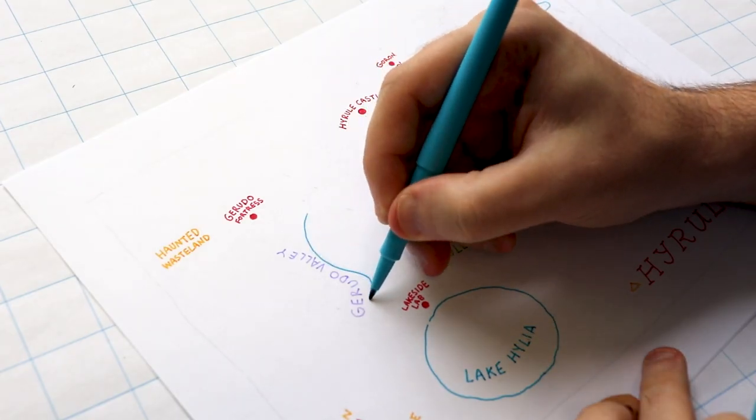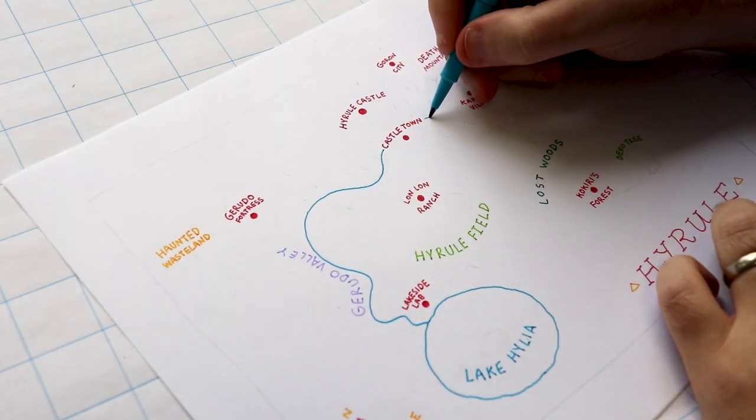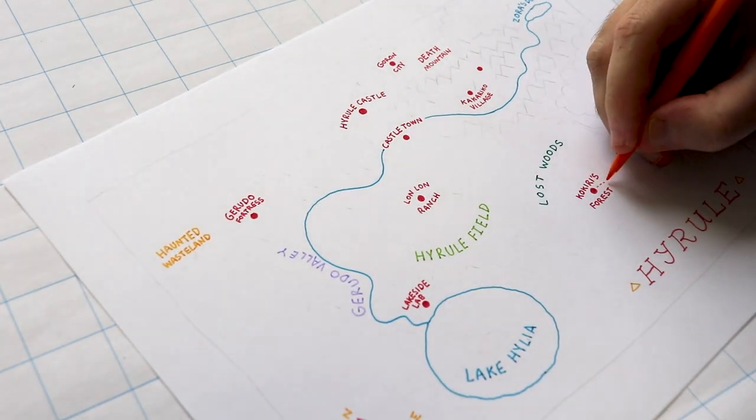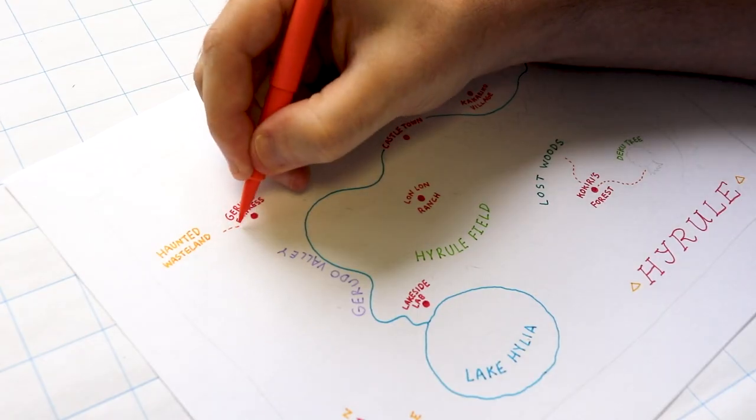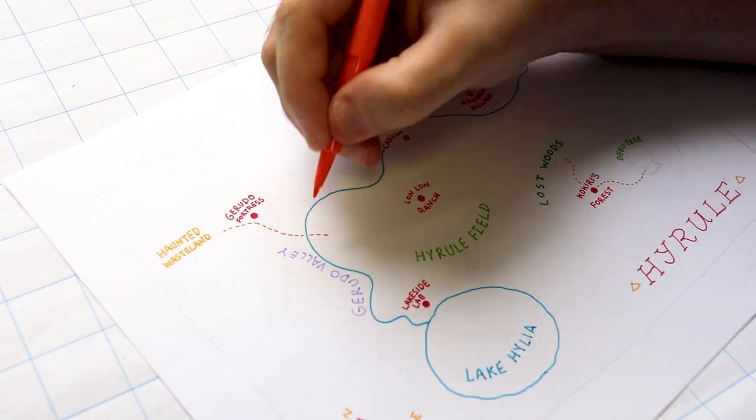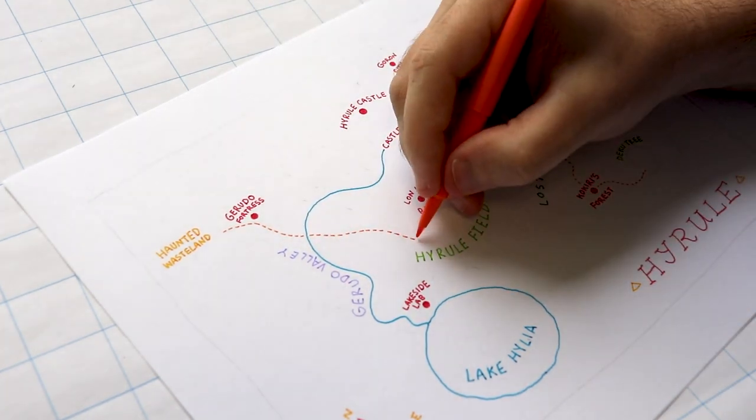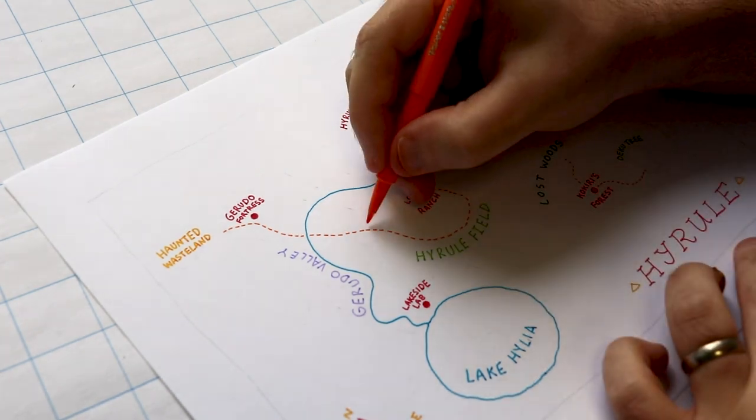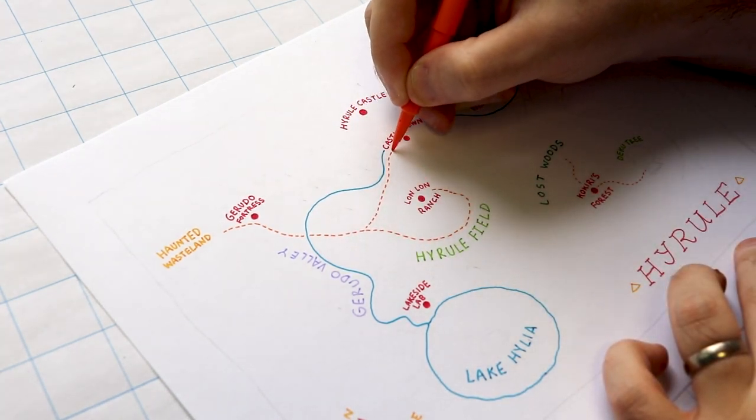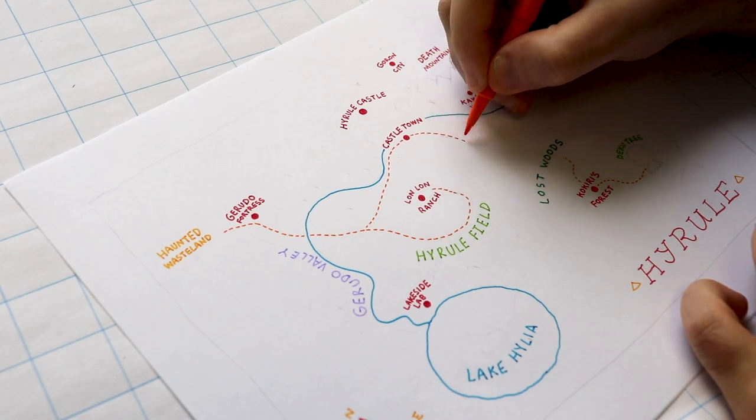Once everything is labeled I'm moving on to the rivers and the roads. There's something really fun about connecting these places with pathways. It kind of makes the map feel alive. You know like I can imagine Link and Epona cruising along one of these pathways from Hyrule Castle Town to Kakariko Village and then up into Goron City. You know it's starting to actually look like a map now.